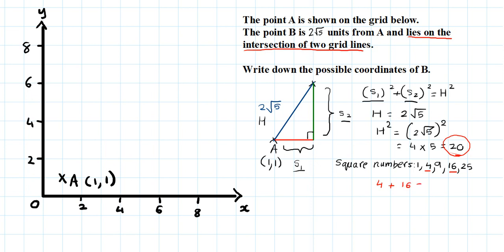So either S1 can be, so there's two possible situations. Situation 1 is S1 squared is 4. So S1 will be 2, square root of 4, which is 2. And we're only looking at positive ones here.